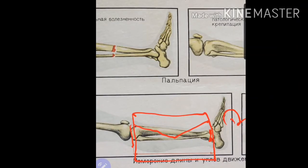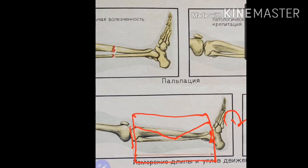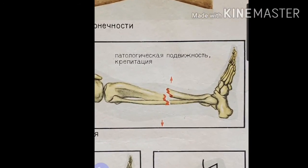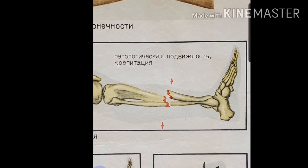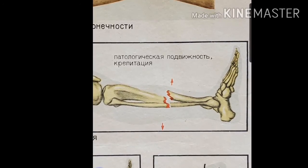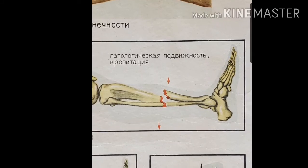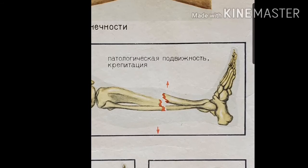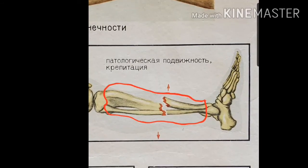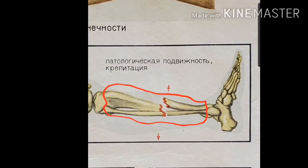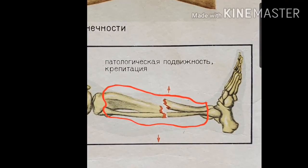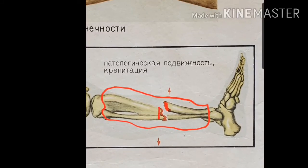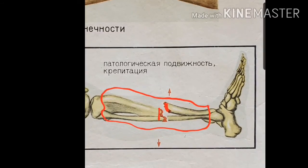Another thing you should check is the presence of so-called pathological mobility. You are looking at the fracture site and performing movement in this area. If there is movement at the fracture site, then you understand that there is a fracture. You can also hear crepitation due to friction between bone fragments, and that would be another very reliable clinical sign for fracture.